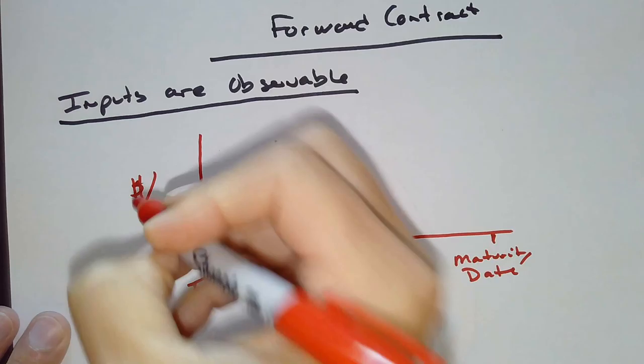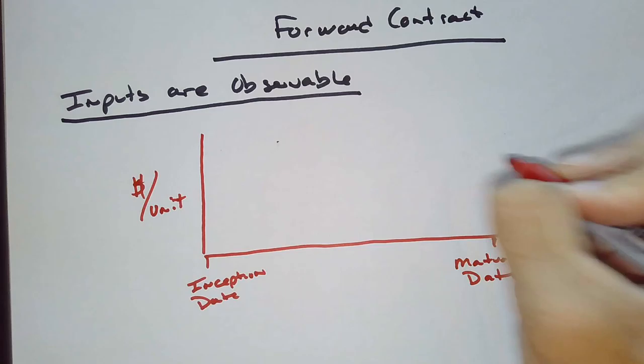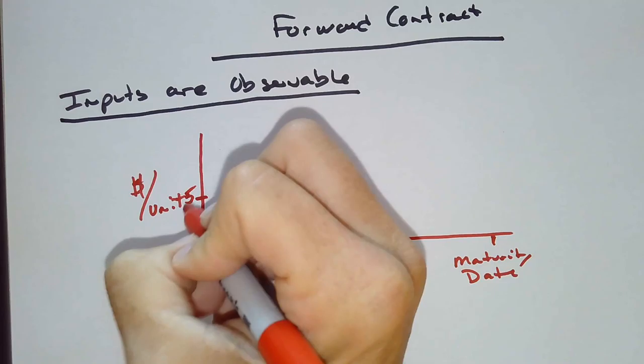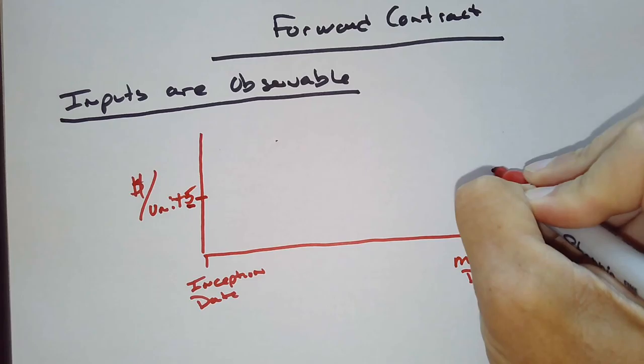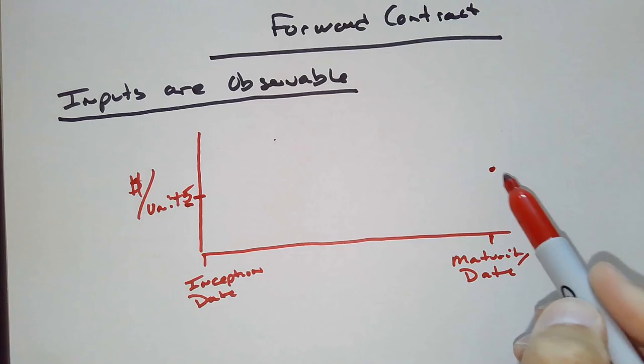So we're entering into the contract here with the objective of transacting business on this date in the future. And we've determined that, and this is price per, this is dollars per unit of the asset. We've determined that we are going to transact the business. We're going to do this trade at, we'll say this is going to be $5 per unit. That's $5 per unit. That's what we're going to transact the business. $5 per unit. That's our agreement. And we paid no money up front for that.